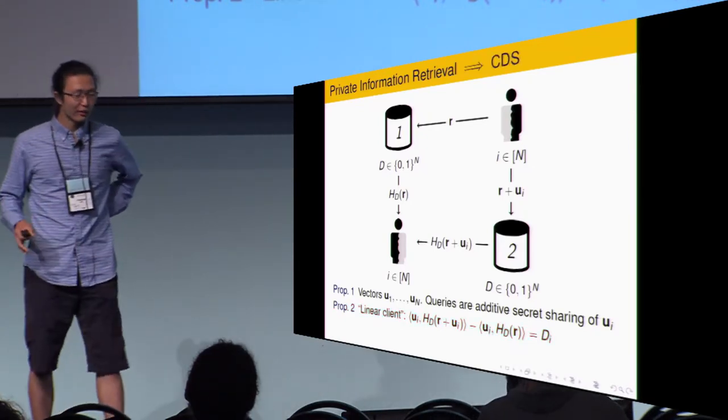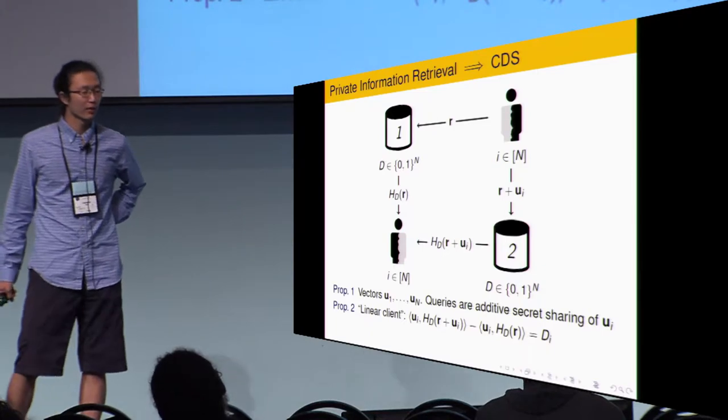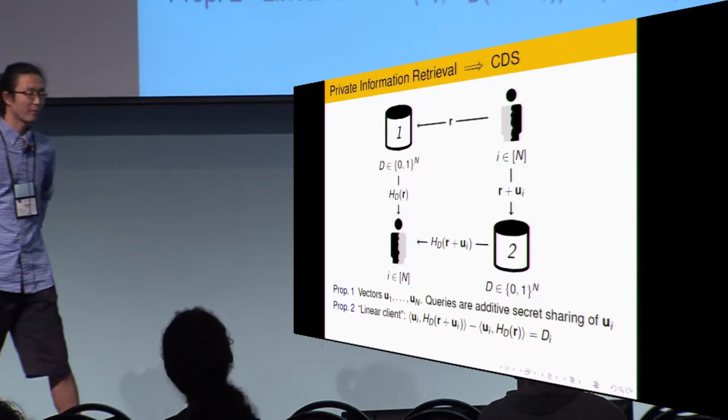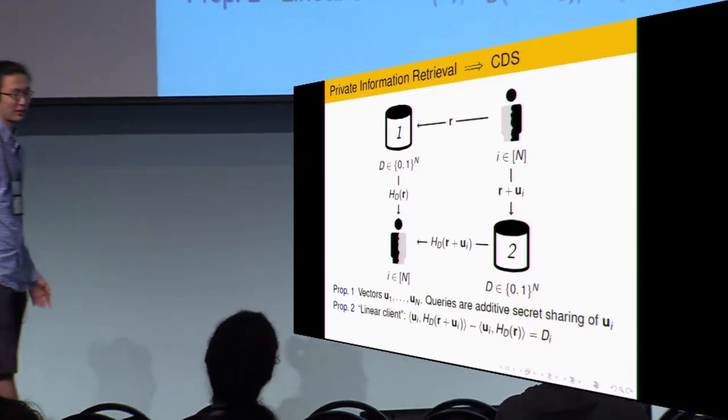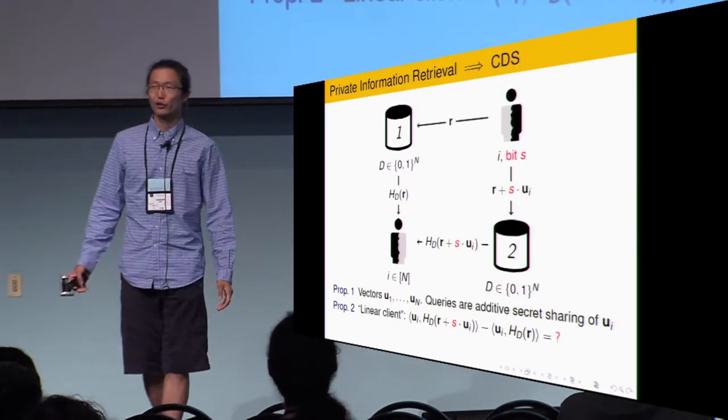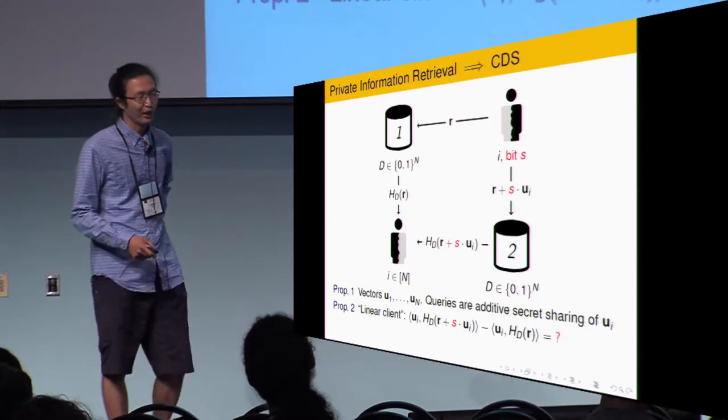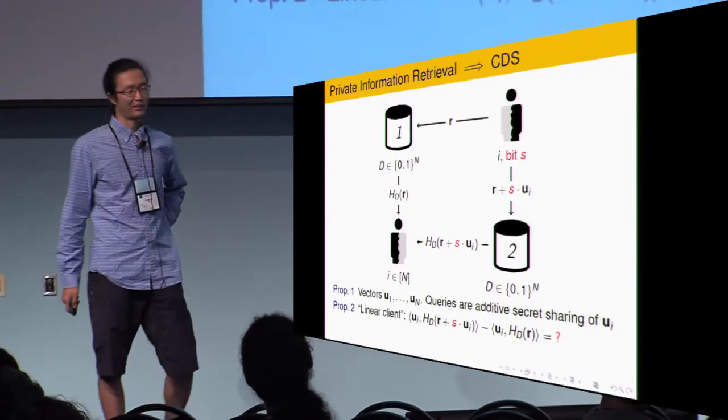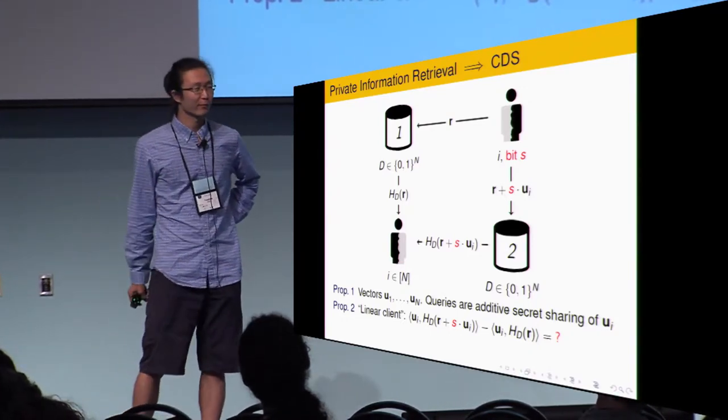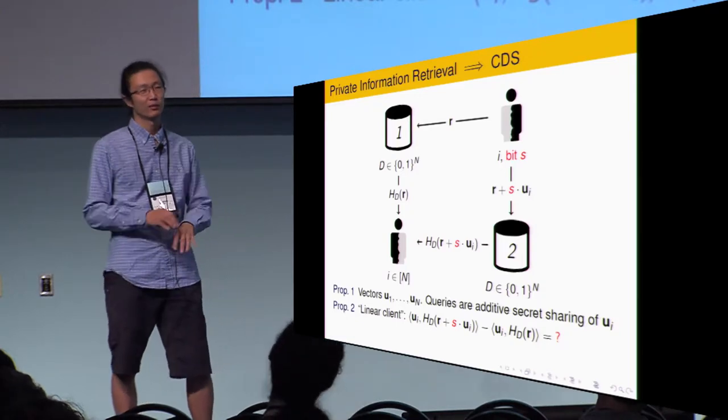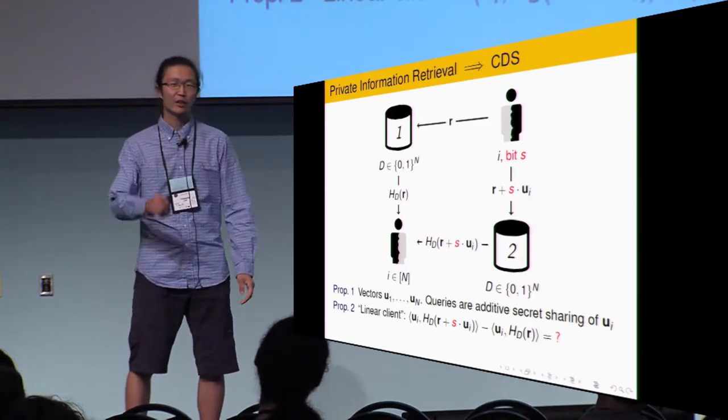As long as you have a PIR where the client output S entry by doing something linear on the side of the answer he receives, you can transform this PIR to a PIR with this equation. The total communication complexity would increase a bit, but only by constant factor. Assuming we have both these properties, we are ready to transform this PIR to a CDS scheme. First thing, in CDS, there's a secret bit. We need to embed it somewhere. We give the bit to the top client.